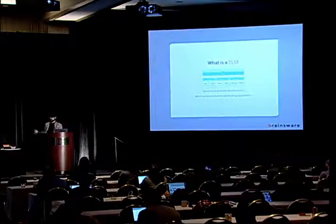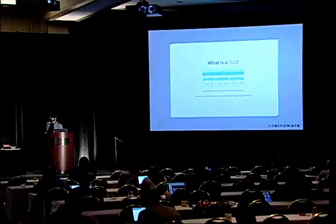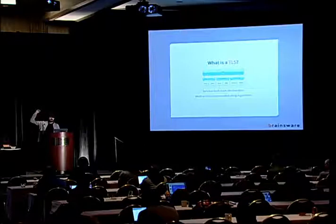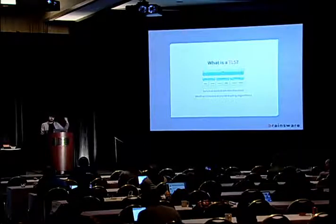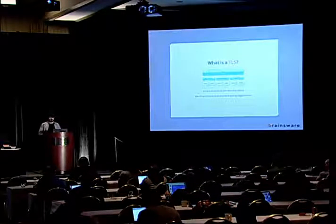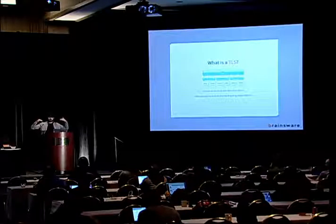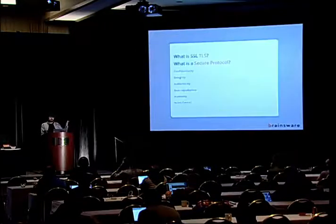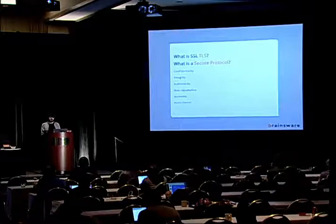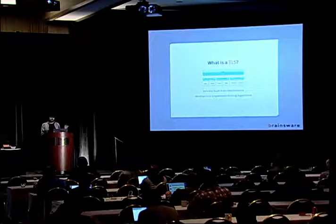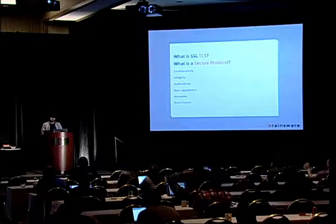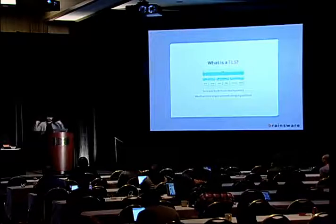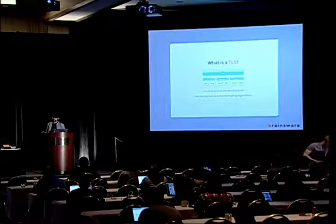TLS is actually quite a simple protocol or a simple set of ideas. On top we have those services we just discussed, implemented like services. Below that we have certain mechanisms like signatures, encryption, and hashing. For instance, confidentiality is guaranteed by encryption, integrity by hashing, and authenticity by signatures. Underneath we have the algorithms those are implemented in. MD5 — I hope nobody uses MD5 these days anymore; in the modern versions of TLS it's pretty much deprecated.